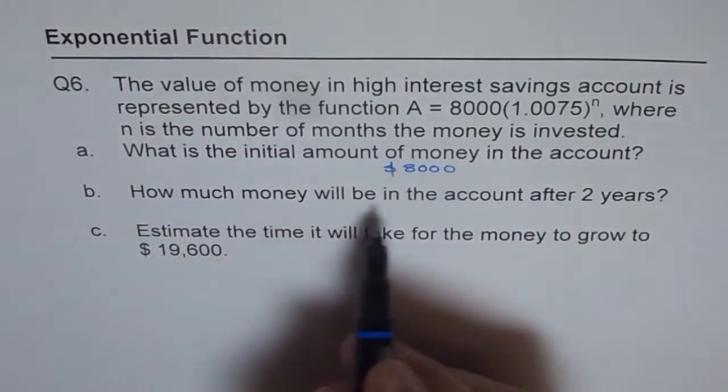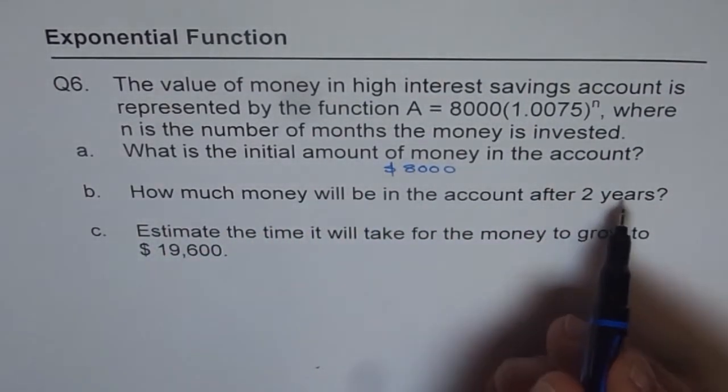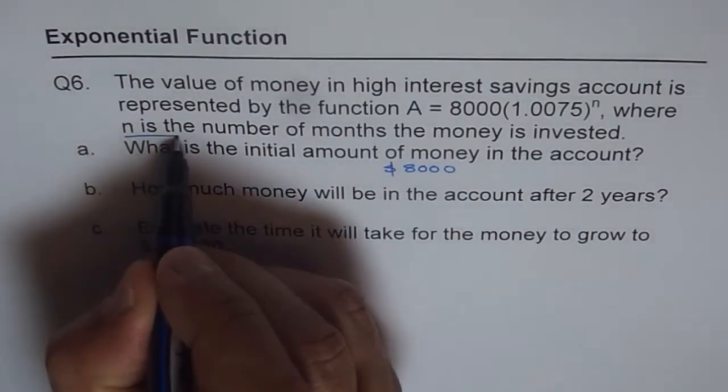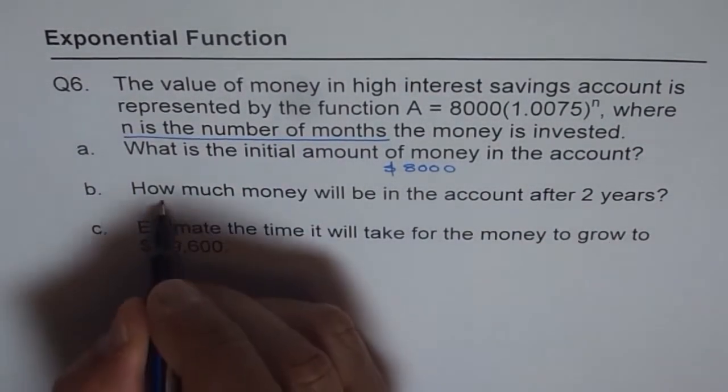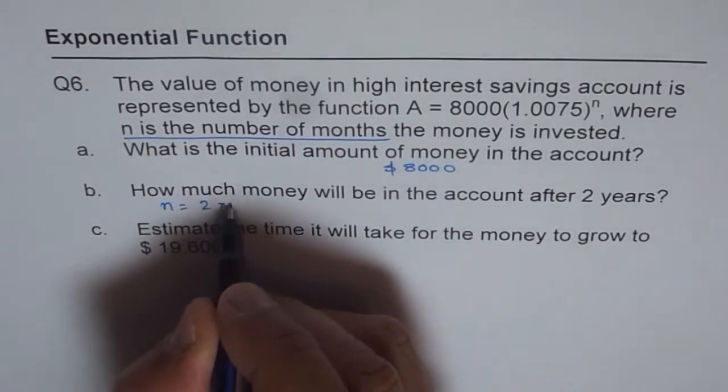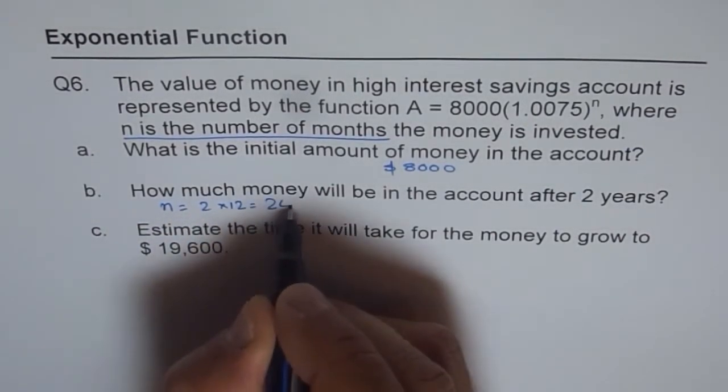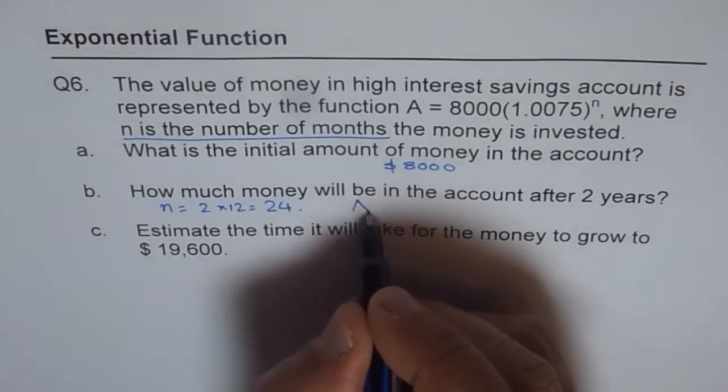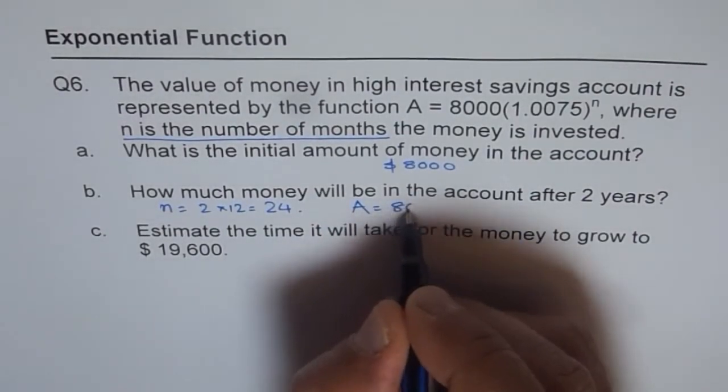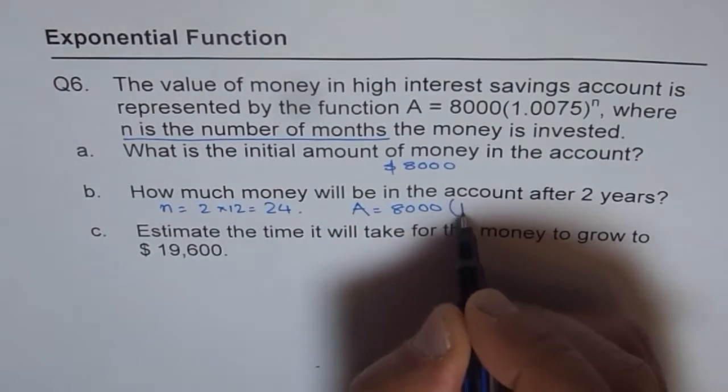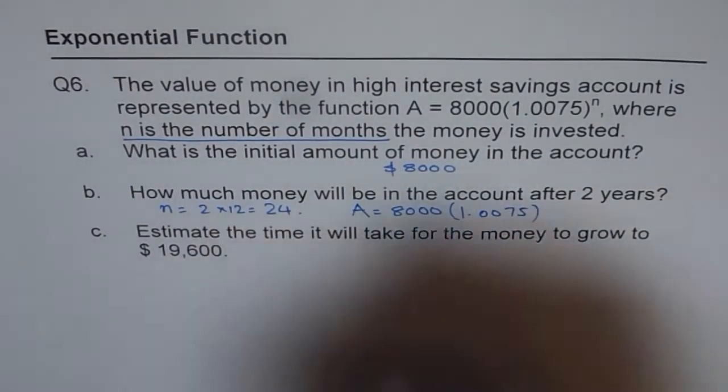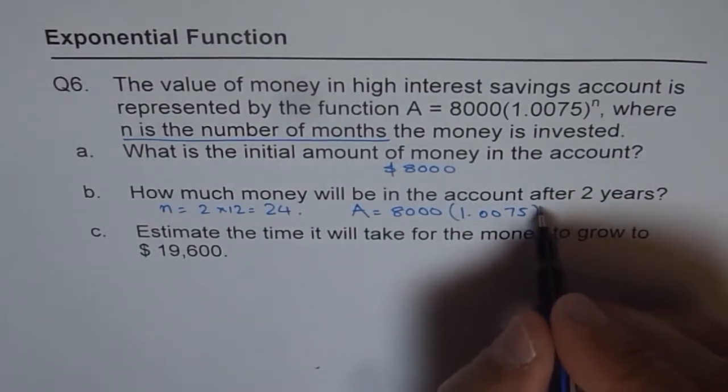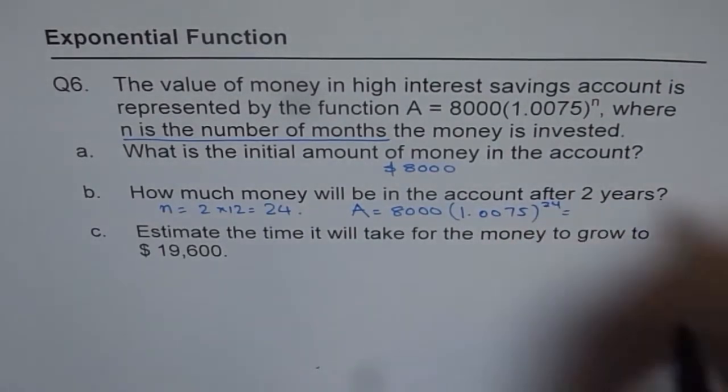How much money will be in the account after 2 years? Remember, N is number of months. So, 2 years means N equals 2 times 12, which is 24. And therefore, we get A equals 8,000 times 1.0075 to the power of 2 times 12, not 2, okay? 24. So, that could be one error.